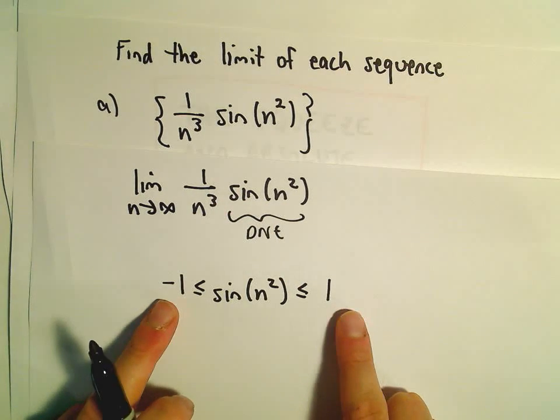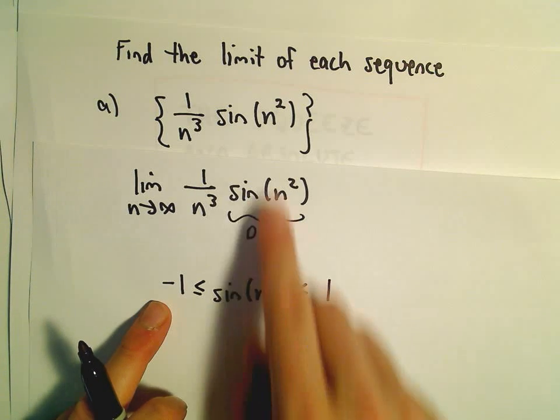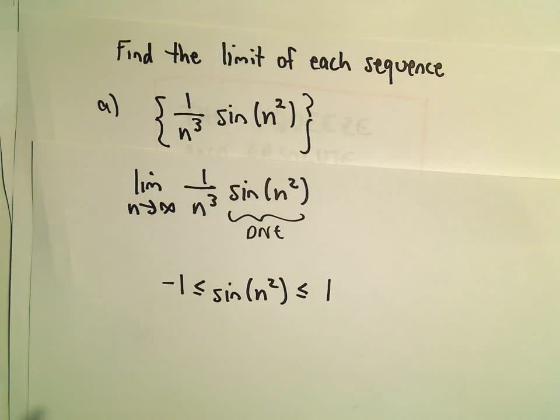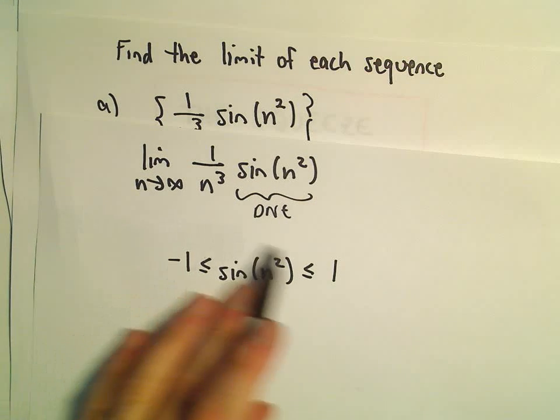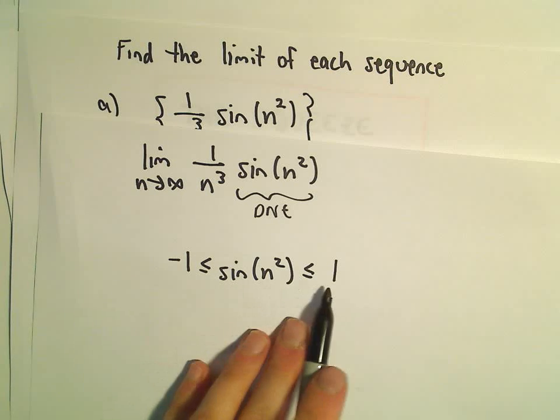We're going to try to show that those limits have the same value, and therefore the limit that we're looking for will also have the same value. This is the first step. Sine of whatever is between negative 1 and 1.